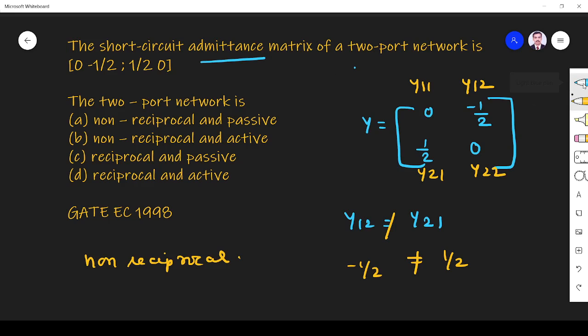And so option C and D are not correct, so it must be either A or B. We know that all the active networks are non-reciprocal.